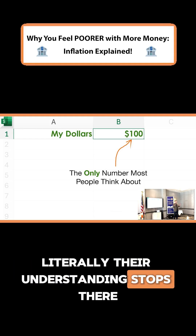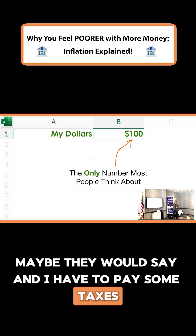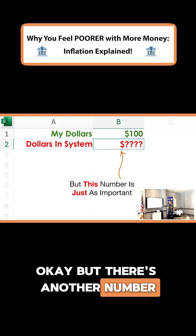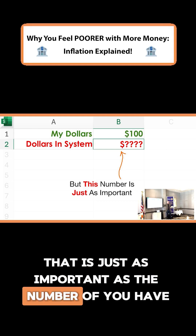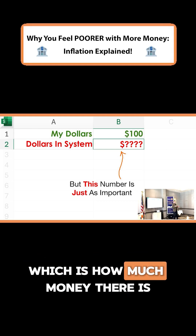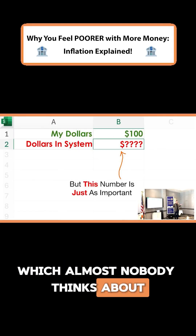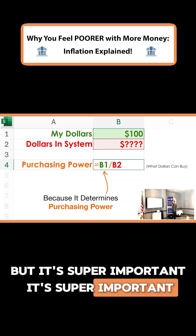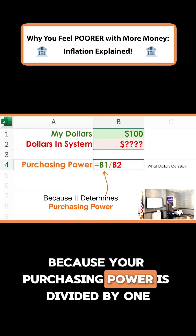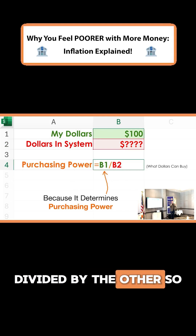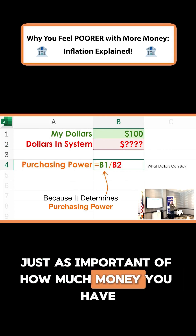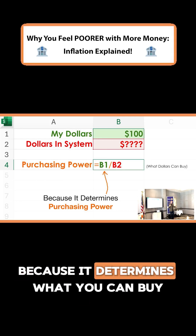Their understanding stops there. Maybe they would say, yeah, I have to pay some taxes. But there's another number that is just as important as how much you have, which is how much money there is — which almost nobody thinks about, but it's super important. Your purchasing power is your dollars divided by the total dollars.